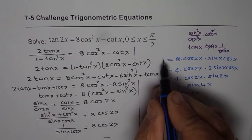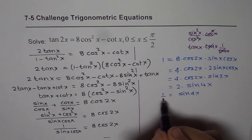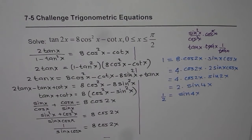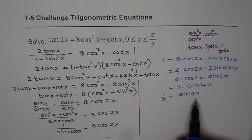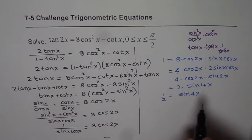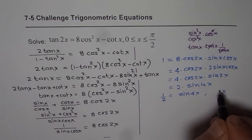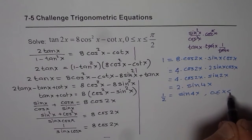So finally we got such a simple expression: sine 4x equals to half. And now we need to find solution where x is greater than or equal to 0 and less than or equal to pi by 2.